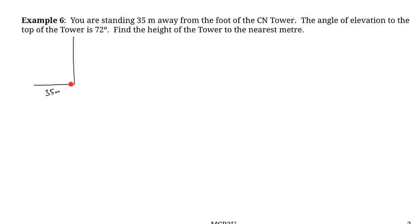This question says you are standing 35 meters away from the foot of the CN Tower. The angle of elevation to the top of the CN Tower is 72 degrees. Drawing the triangle: the horizontal line is at your feet, the 72-degree angle is formed looking up to the top, and the CN Tower makes a 90-degree angle with the ground.